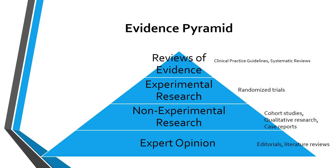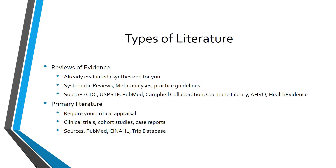We will focus on sources that provide this type of evidence. You may also be familiar with the 6S pyramid developed by DiCenso, Bailey, and Haynes, with single studies on the bottom, synopses in the middle, above that summaries, which include best practice guidelines and summaries of syntheses with expert opinion on a topic to create recommendations for practice. At the top of the 6S pyramid are systems, which are usually more individually focused and generally not available for public health, so we won't be discussing those here. In these modules, we will focus on sources to search for best practice guidelines and summaries, systematic reviews, or reviews of evidence for public health.